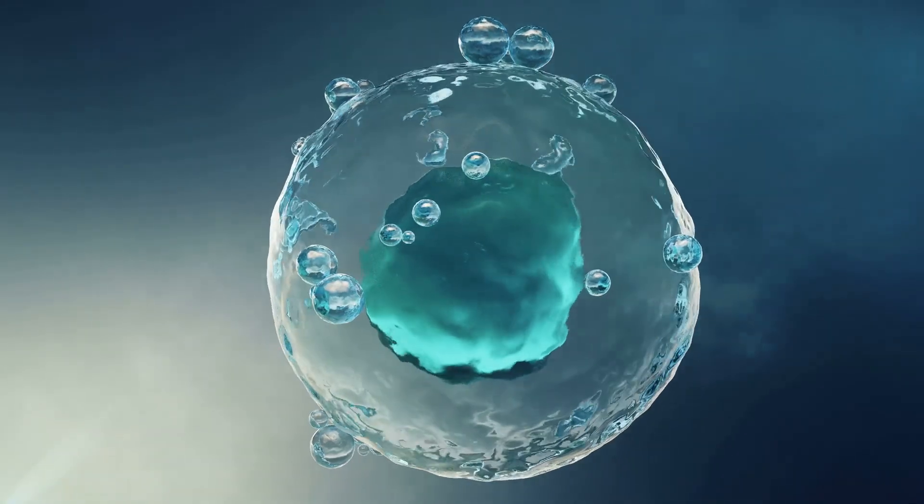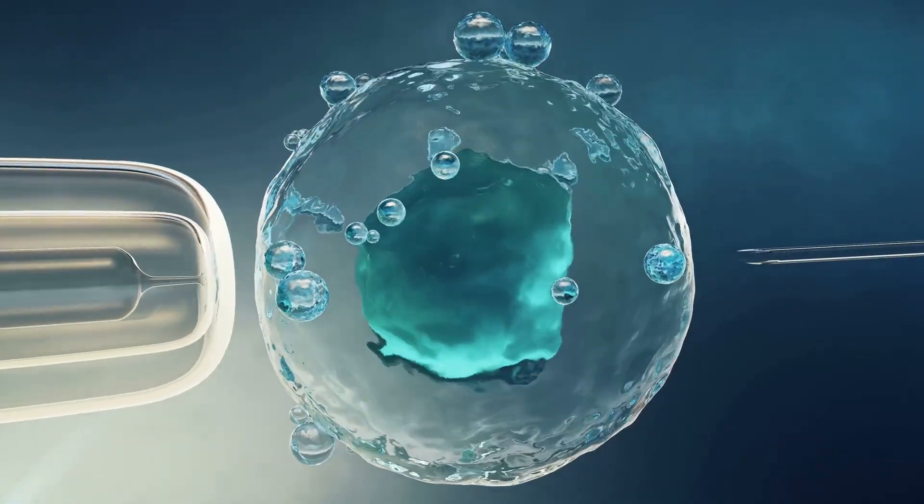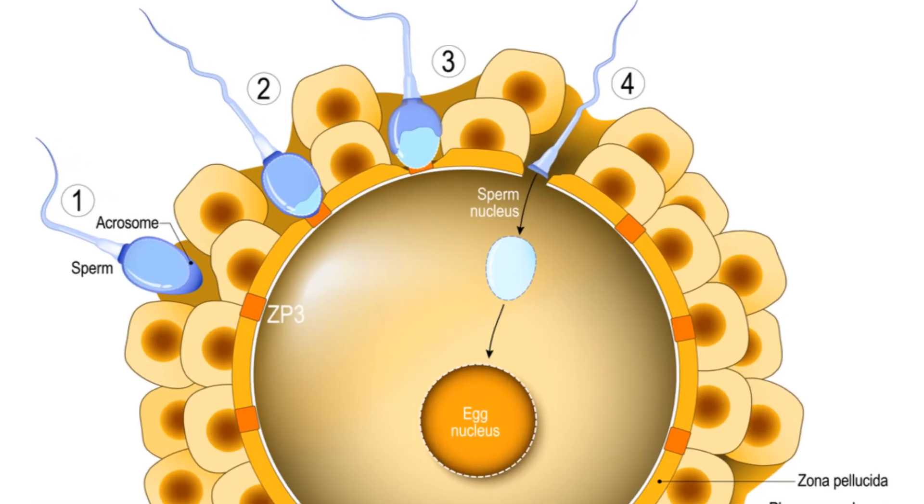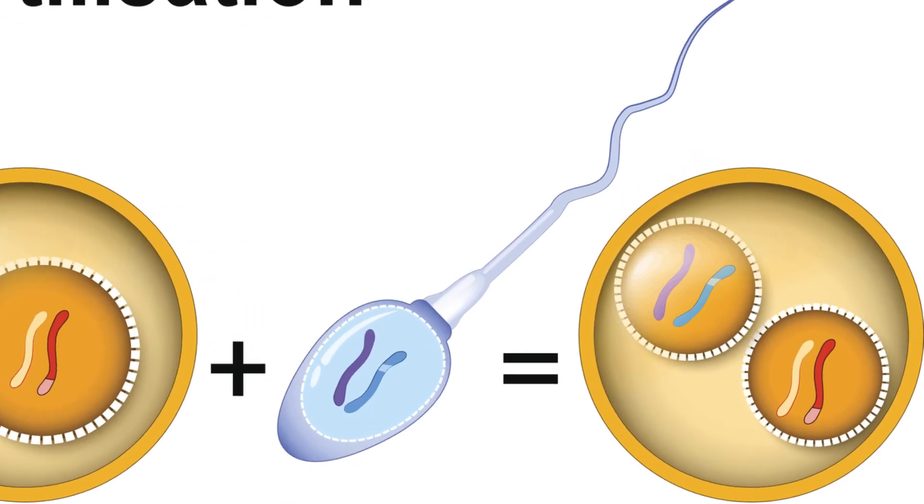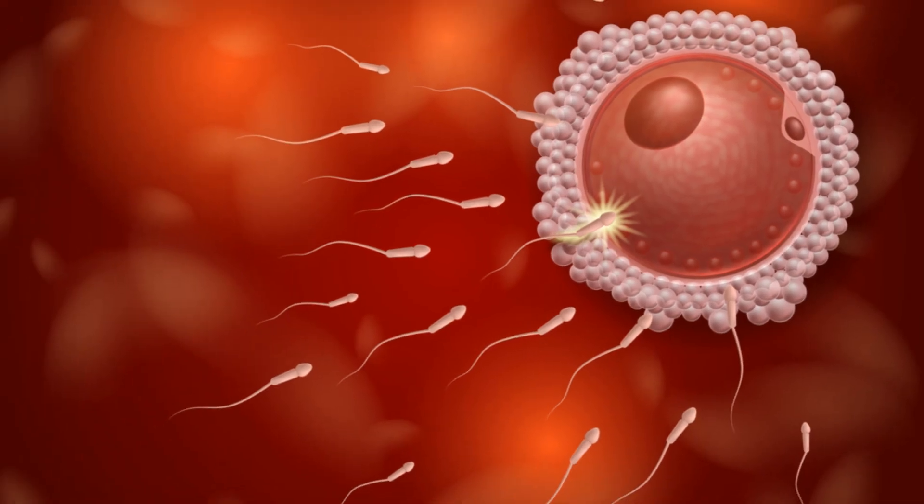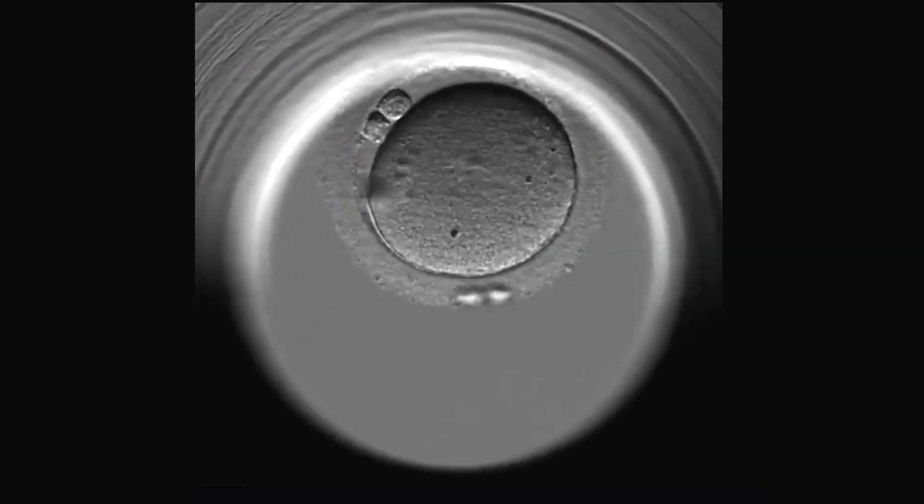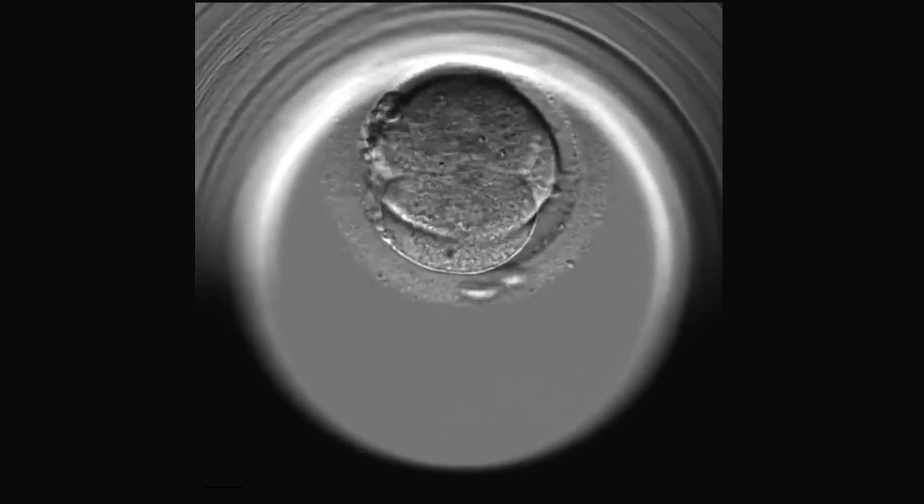Once the sperm penetrates the oocyte, it triggers a series of rapid changes. The oocyte completes its second division, expelling half of its chromosomes into a tiny cell called the polar body.